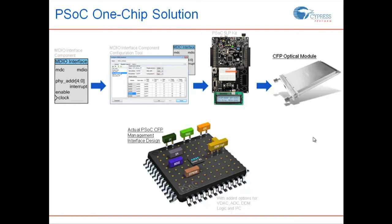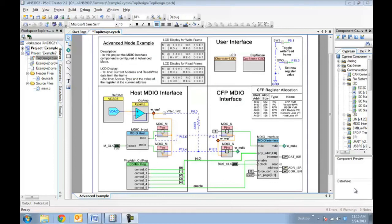We will walk you through the first three steps of this flow. Now let's take a look at an example that demonstrates communication between the CFP MDIO interface and the host MDIO interface in PSOC Creator. Here's the schematic for the example project. The MDIO interface component implements the CFP MDIO interface. The MDIO host component emulates the host MDIO interface. User interface switches allow the user to access the CFP register set, and the LCD allows the users to view data exchange on the MDIO bus. The MDIO bus connects the host MDIO interface and the CFP MDIO interface.